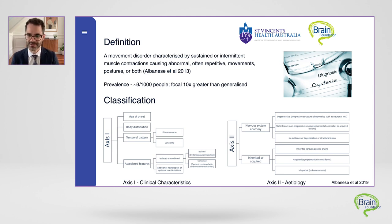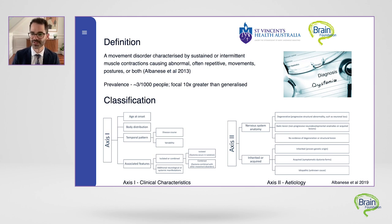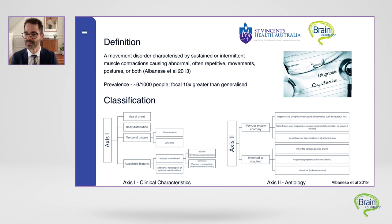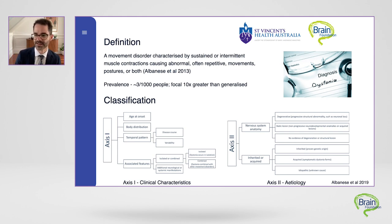Specifically, he noted that the abnormal movements seen with dystonia occurred in the absence of any weakness and were often initiated or worsened by voluntary action. Our current definition of dystonia was most recently updated in 2013. It's important to note that the involuntary movements we see in dystonia are not due to the actual nerves or the muscles themselves, but rather abnormal electrical signals generated in the brain telling those muscles to contract.